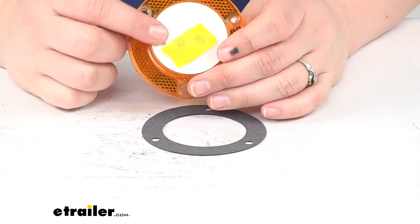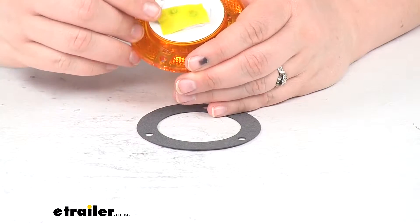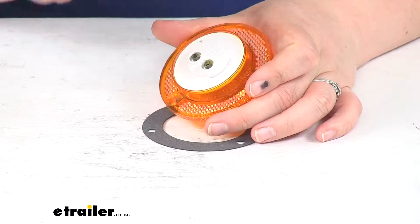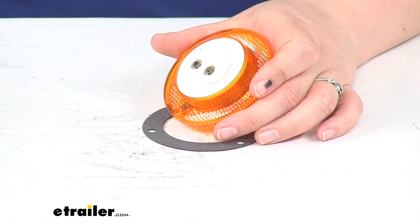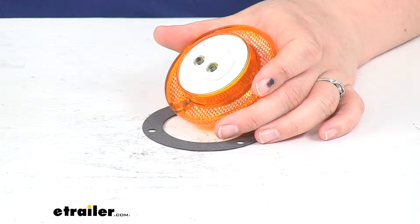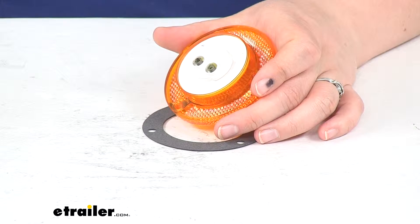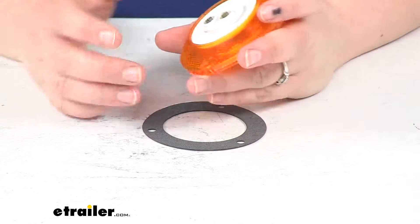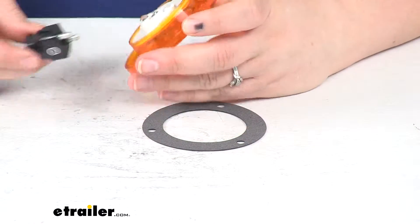It accepts an industry standard two prong plug at the back. Comes with a little tape on those prongs to keep in the already applied dielectric grease. That's that kind of sticky stuff that you see back there. That's just to help protect the connection, make sure that no dirt or debris gets into that terminal, and keeps corrosion to a minimum.